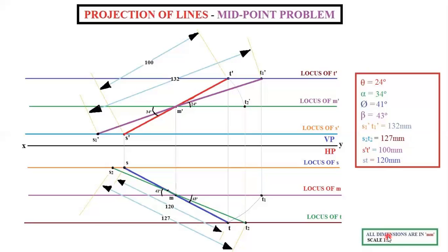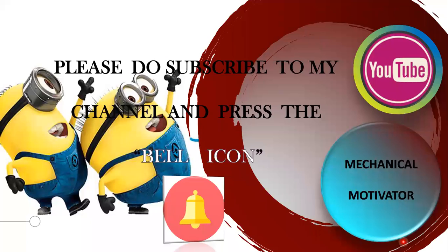At the right bottom corner, write: all dimensions are in mm, scale 1:1. The text height for this will be 5 mm. If you have any doubts, type in the comment section and do subscribe to the channel Mechanical Motivator to get all the videos we upload. Thanks for watching. Have a great day.